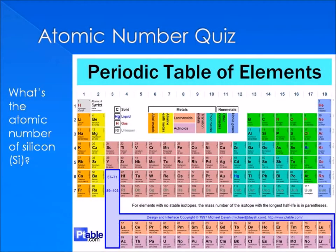Now I'd like to test you on what we've learned so far. Using this periodic table I provided, find the atomic number of silicon. We'll learn how to use this table more in the future, but for now we'll just use it for this. Hopefully you said that silicon has an atomic number Z equal to 14. You should have found silicon right beneath carbon. I put the atomic symbol of silicon on the slide so you could find it easier. If you had Z equal to 14, you were right. Good job.